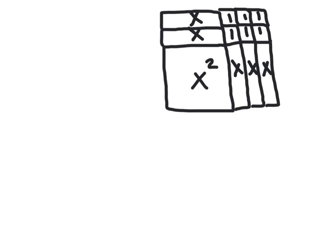The area as a sum - sum means add - so we've got an x² and if I count them all up it looks like we've got five x's and we've got six ones.